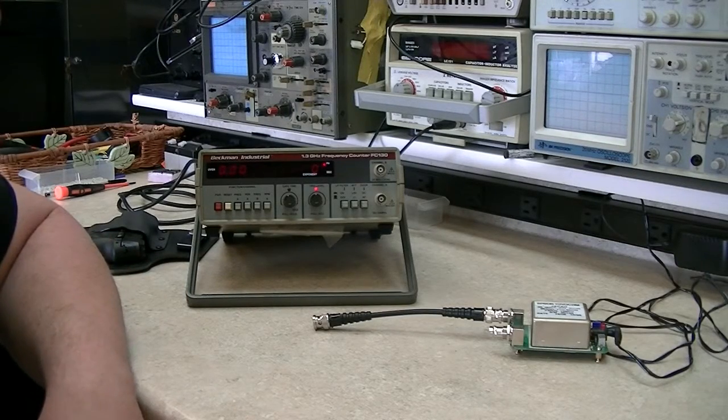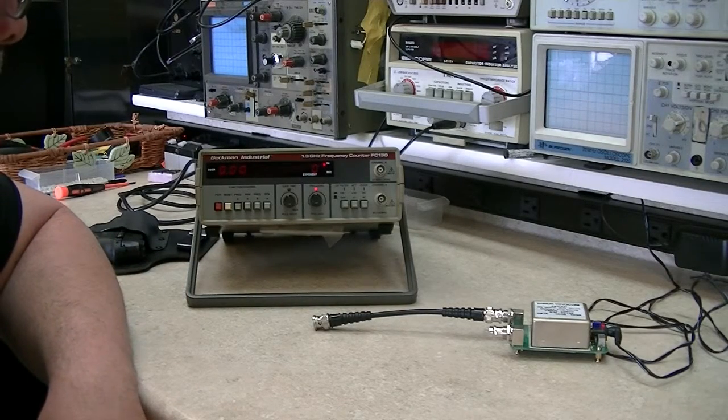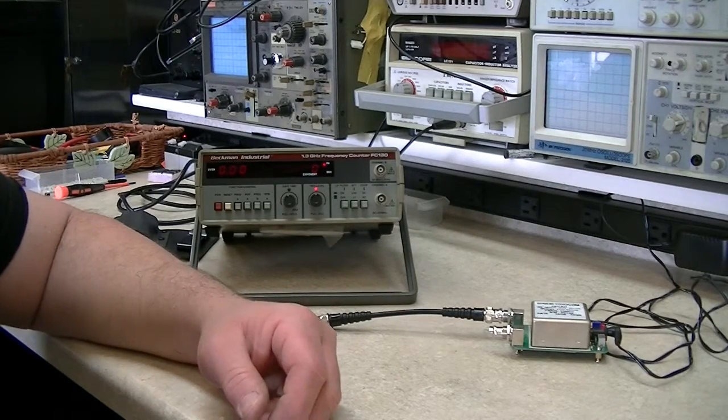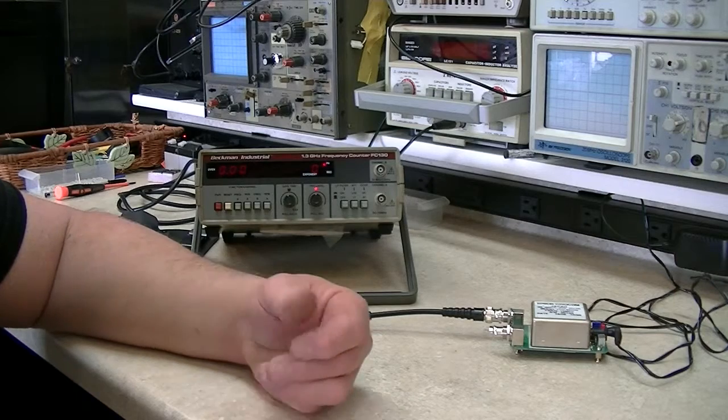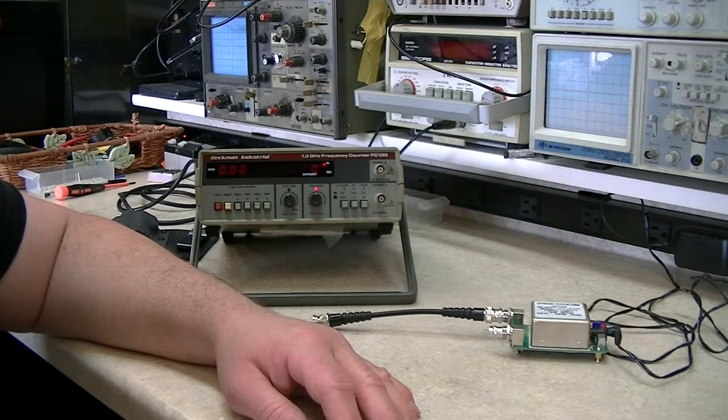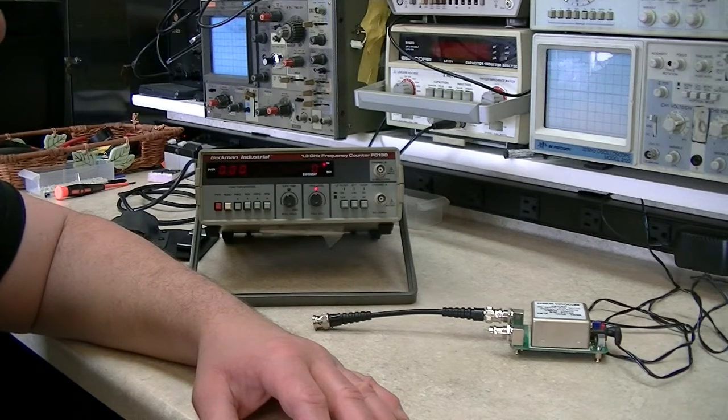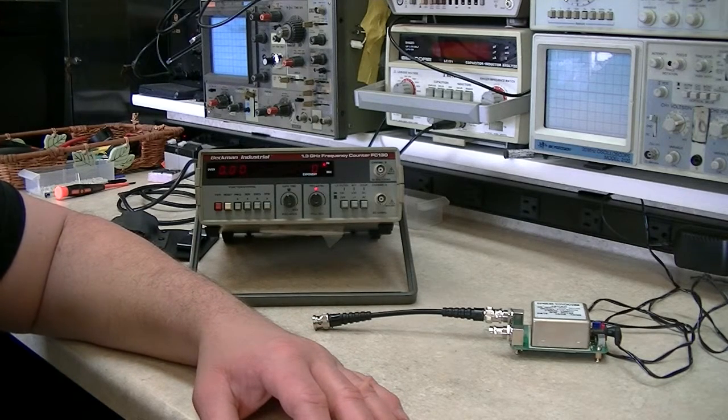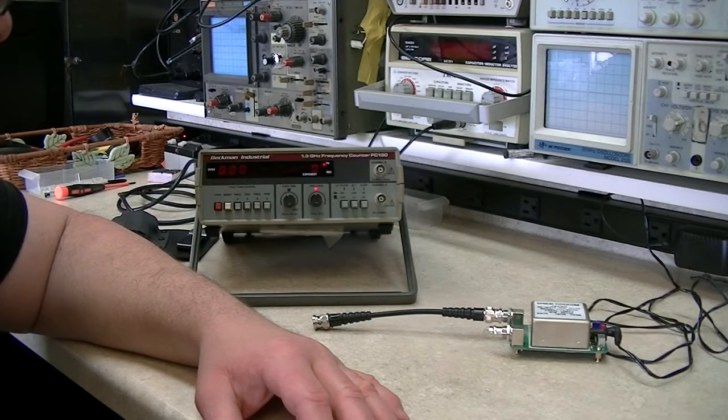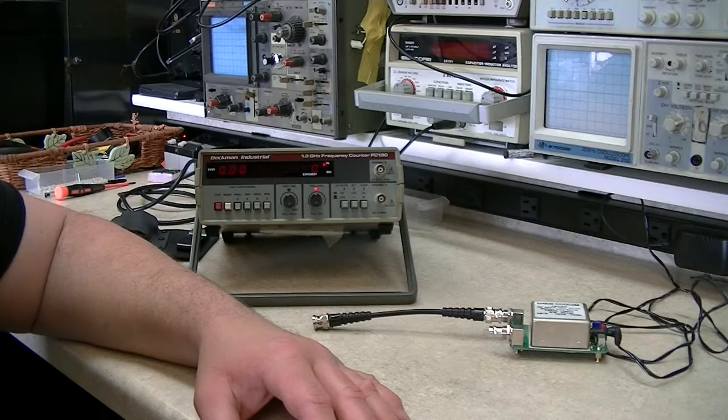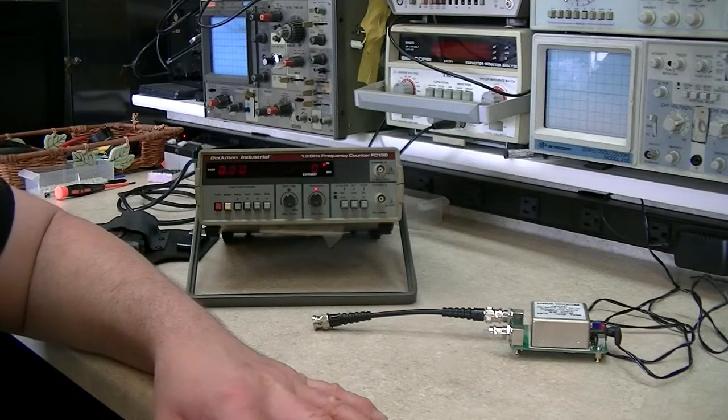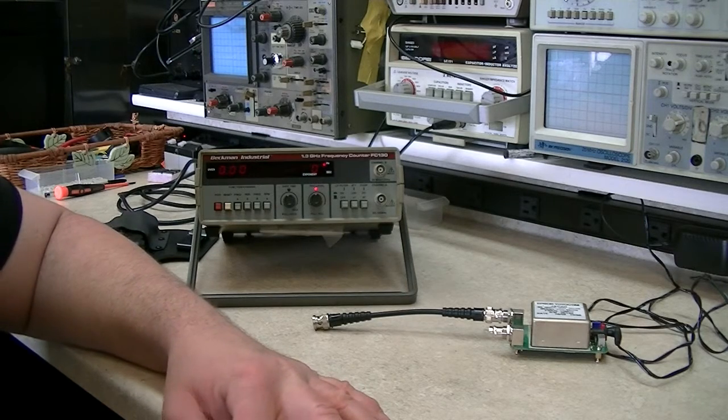What I've got here is a Beckman FC-130 frequency counter that I purchased a while back. I actually purchased a lot of four of them off eBay for repair, and I've repaired all these now. Three of the four I'm going to sell. I wanted one since I didn't actually have a dedicated frequency counter, so I kept the one that was the nicest visually. This one here didn't have any scratches at all that I could see, so I kept it and I'm going to list the other three on eBay.